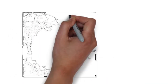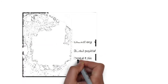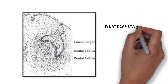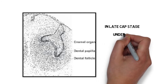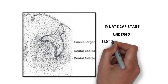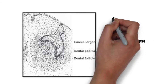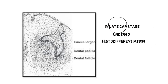In the very late cap stage, we can now appreciate the enamel organ, the dental papilla, and the dental follicle as discrete and separate entities. The enamel organ will give rise to enamel, the dental papilla will give rise to dentine and pulp, and the dental follicle will give rise to the supporting structures. They are now very readily identifiable and distinguishable from one another, and this process is known as histo-differentiation — meaning they are now histologically identifiable and histologically differentiatable.